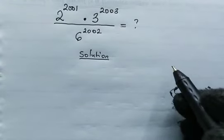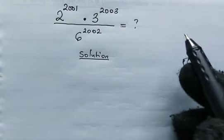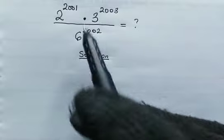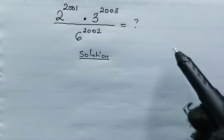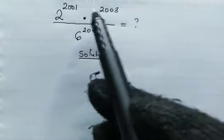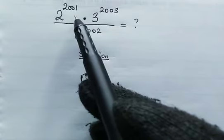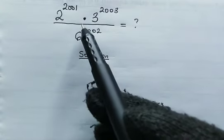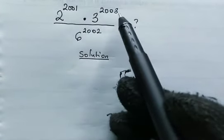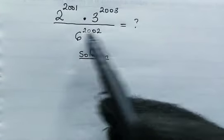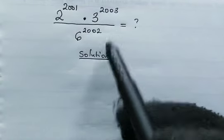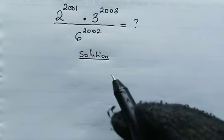Hello, welcome back once again. Today we're going to evaluate this with that calculator. We have here 2 to the power of 2001 multiplied by 3 to the power of 2003, divided by 6 to the power of 2002.